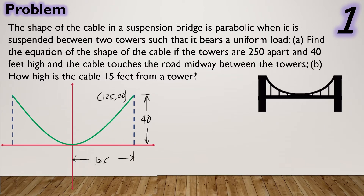For letter B, how high is the cable 15 feet from a tower? Let us use the tower on the first quadrant of our graphical illustration. If that point is 15 feet away from the tower, then that will be 110 feet away from the origin. Hence, we are looking for the y-coordinate of the point on the parabola at x = 110.